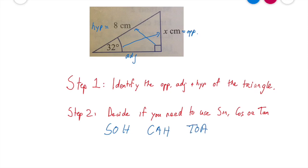So what that means is sine is opposite over hypotenuse, cosine is adjacent over hypotenuse, and tan is opposite over adjacent. So let's break it down then.